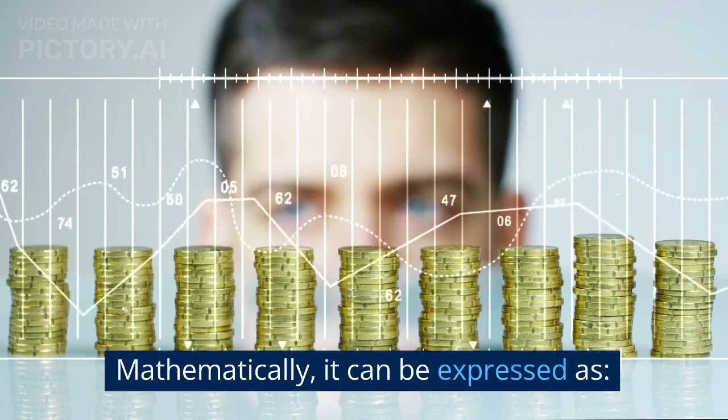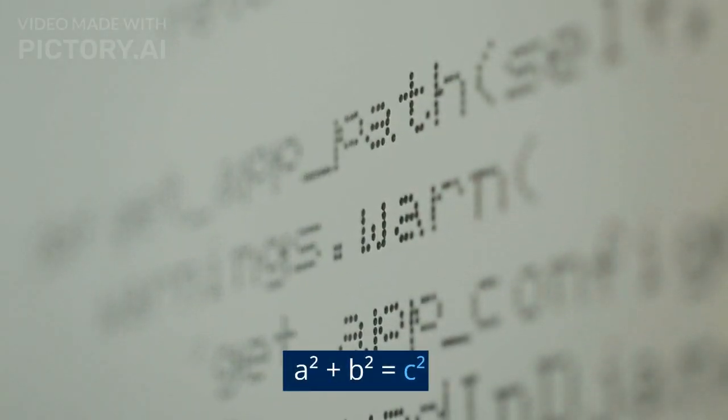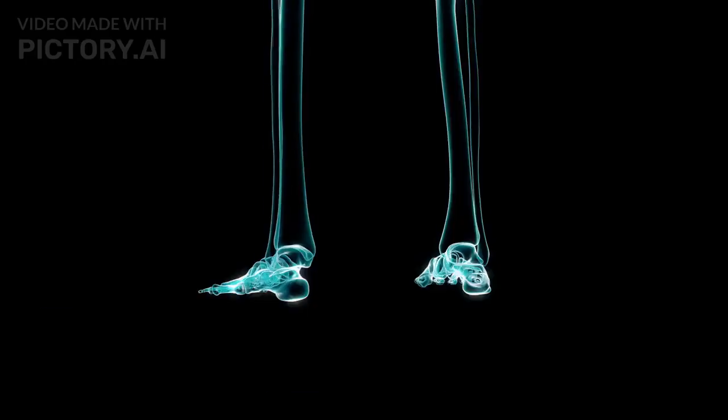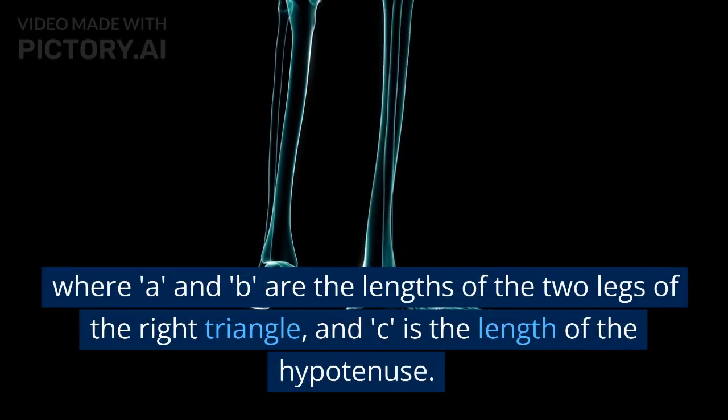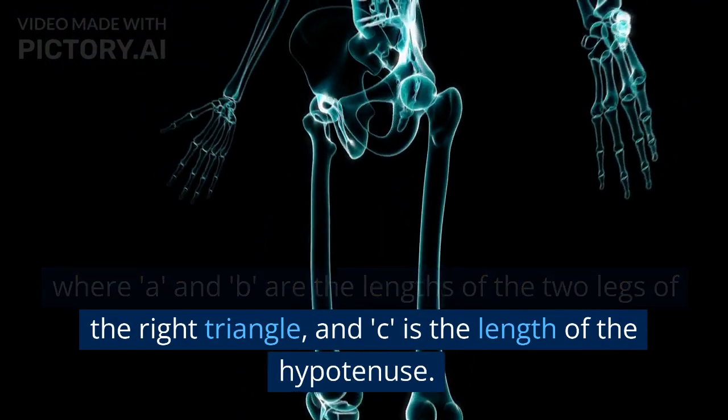Mathematically, it can be expressed as a squared plus b squared equals c squared, where a and b are the lengths of the two legs of the right triangle and c is the length of the hypotenuse.